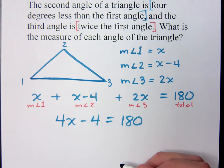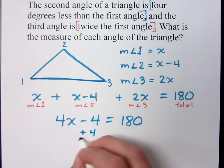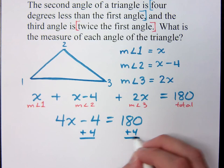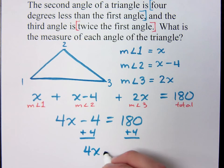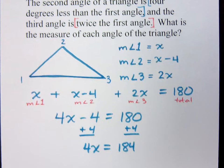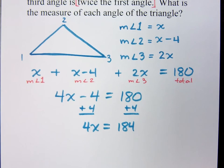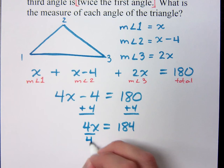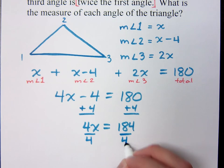So now solve this guy. Add four to both sides. 4x equals 184. And how do I finish this? x equals 46. Divide by four. You do the division and you come up with 46.